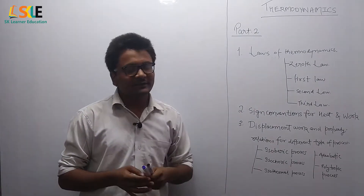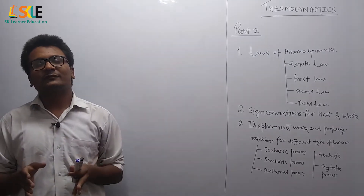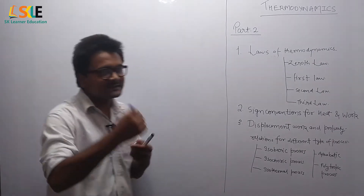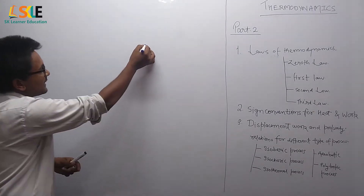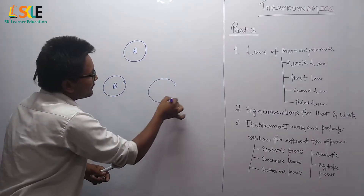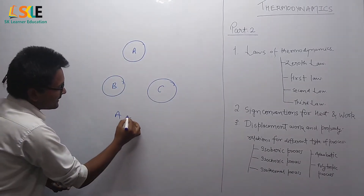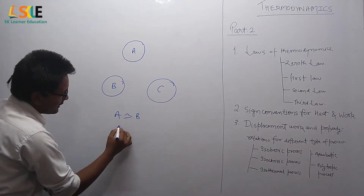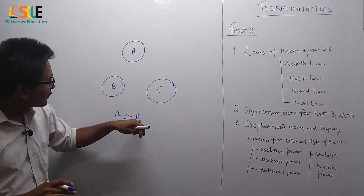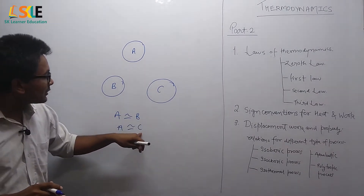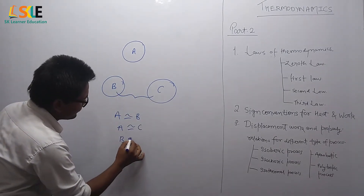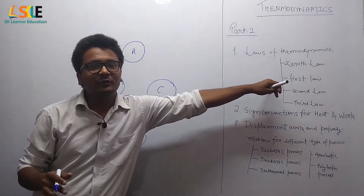The zeroth law of thermodynamics is the basis of temperature measurement. It states that if body A is in thermal equilibrium with body B, and body A is also in thermal equilibrium with body C, then body B and body C will also be in thermal equilibrium with each other. This is the general statement of the zeroth law of thermodynamics.